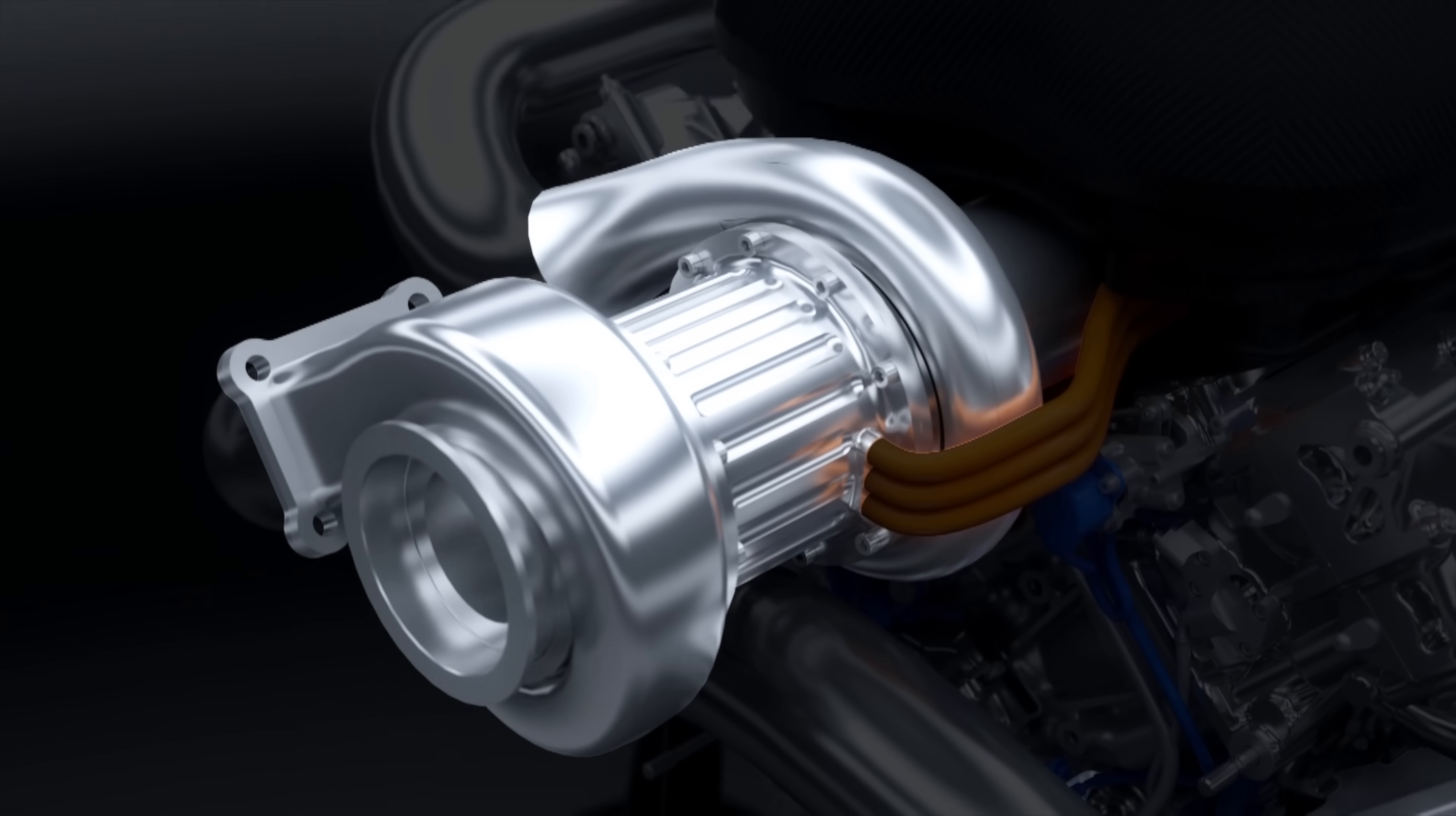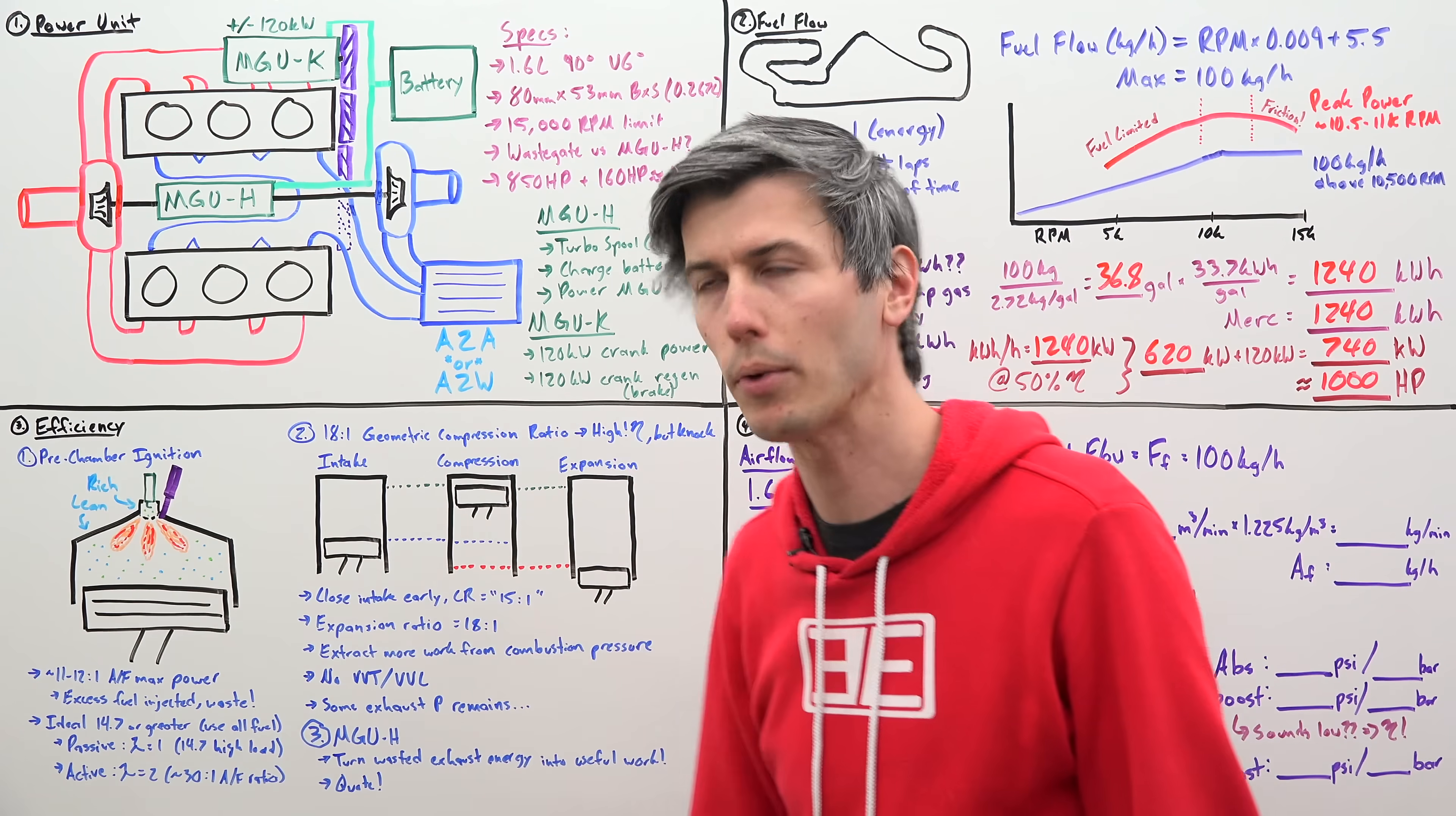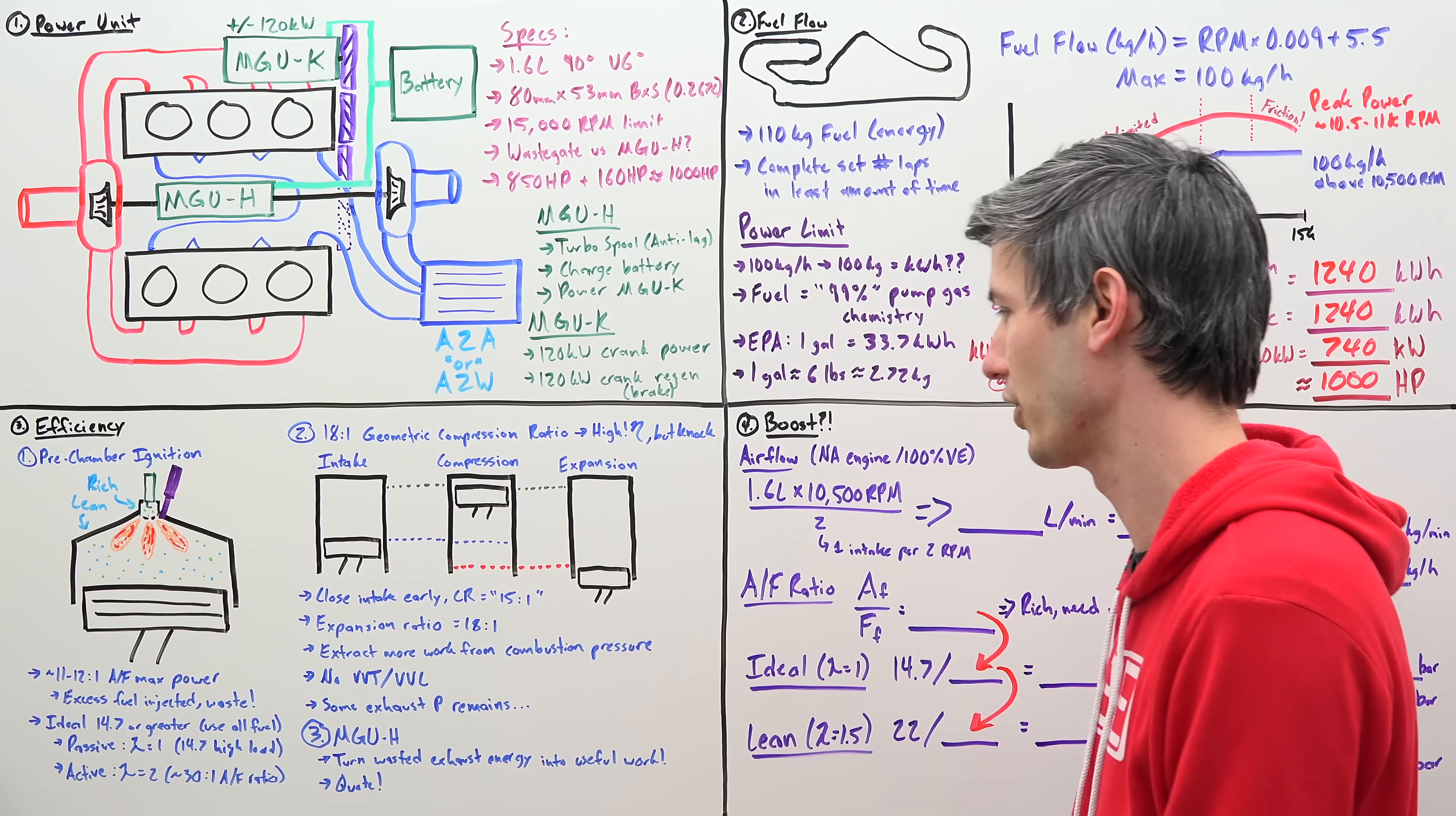Okay, so finally, we get to the third part of this efficiency discussion, which is our MGU-H. So, there is still some exhaust gas pressure remaining, of course, within that cylinder, once combustion has finished. That exhaust is used to spool up this turbocharger, and it's also used to put energy back into the battery using that MGU-H. So, using the MGU-H, you're able to harness some of that energy that would otherwise be wasted with this style of combustion engine.